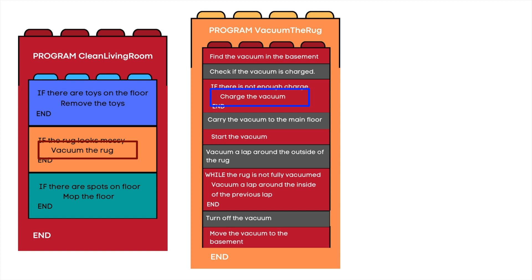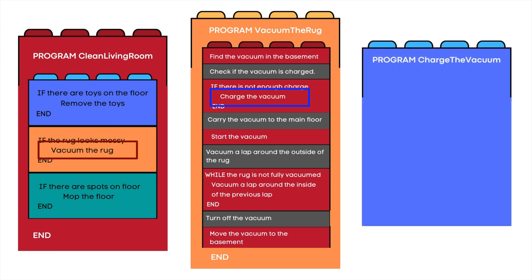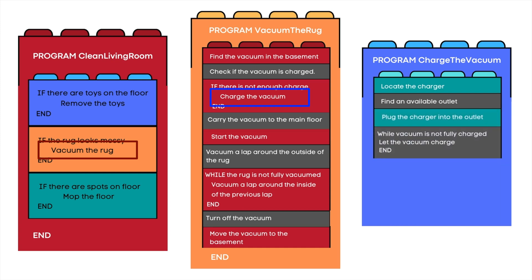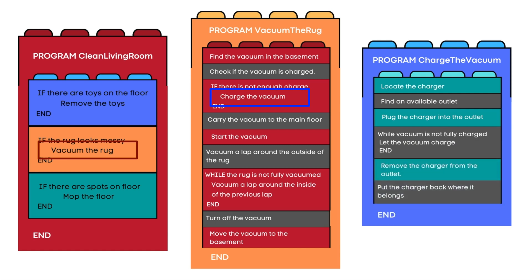For example, a module for charging the vacuum would look something like this: Program 'Charge the Vacuum' — locate the charger, find an available outlet, plug the charger into the outlet, while the vacuum is not fully charged let the vacuum charge, then remove the charger from the outlet and put the charger back where it belongs. Every function is really a series of functions — every module can and often should be broken into smaller modules.